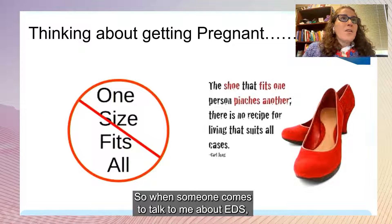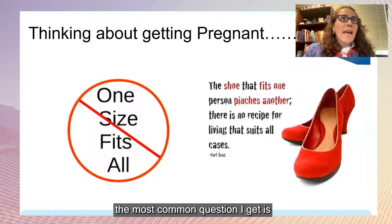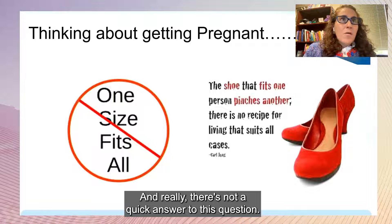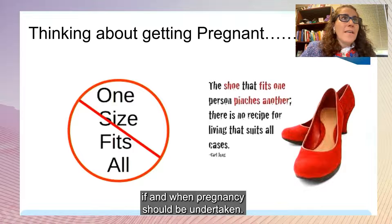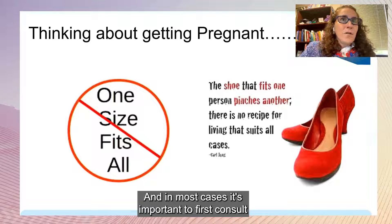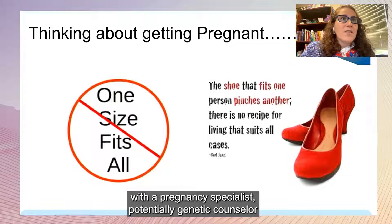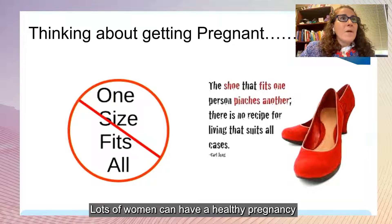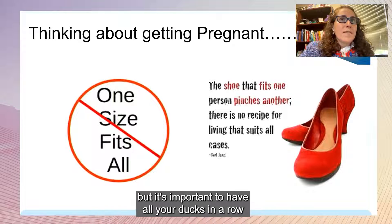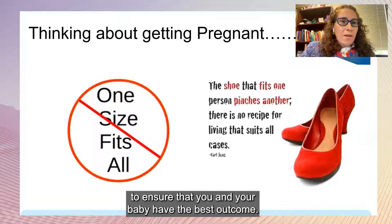When someone comes to talk to me about EDS, the most common question I get is: is it safe for me to have a baby? And really, there's not a quick answer to this question. There's a lot of things that go into deciding if and when pregnancy should be undertaken. In most cases, it's important to first consult with a pregnancy specialist, potentially a genetic counselor or geneticist, and also a cardiologist prior to getting pregnant. Many women can have a healthy pregnancy, but it's important to have all your ducks in a row to ensure that you and your baby have the best outcome.